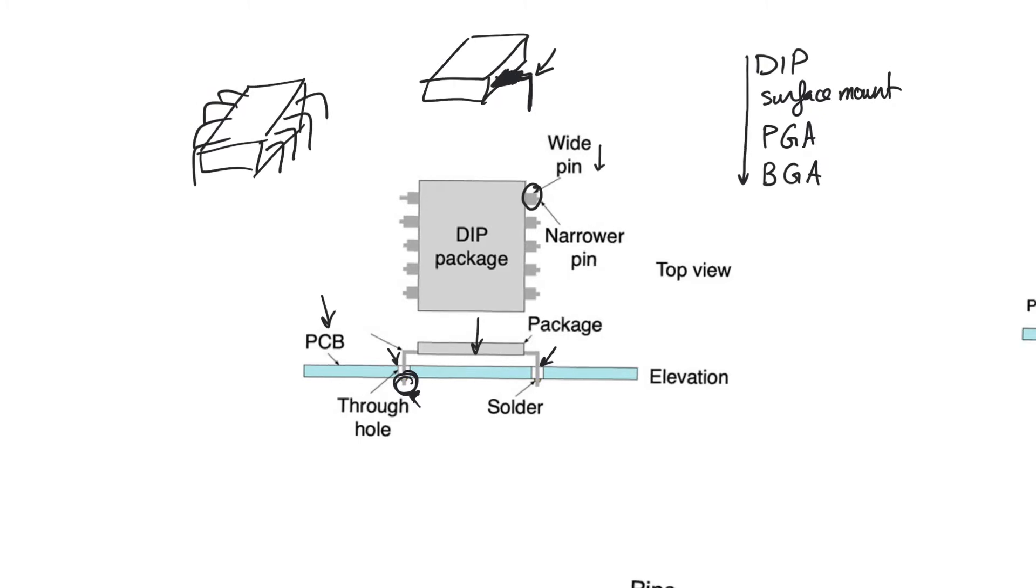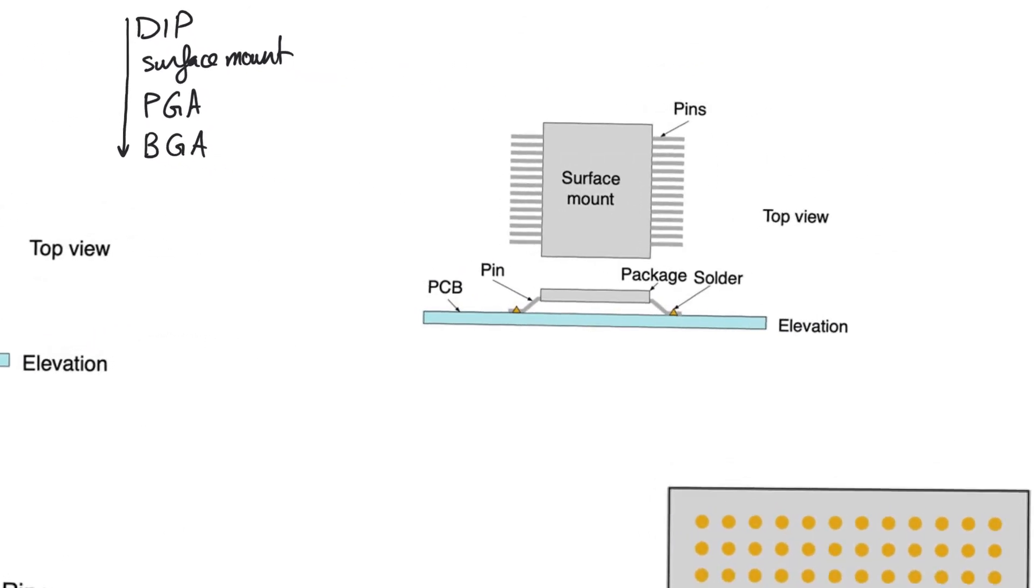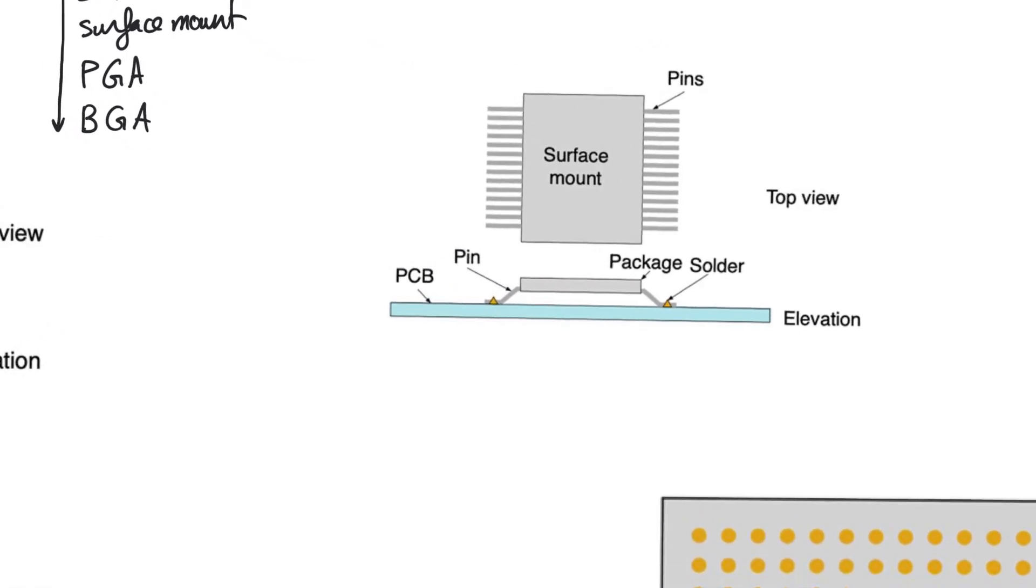In that case, the only practical packages are either surface mount packages, PGAs, or BGAs. Surface mounts are the easiest packages to understand because they are very simple and really the natural progression of DIP packages.